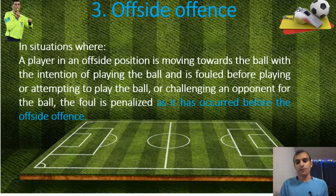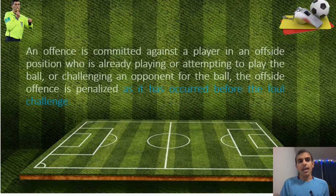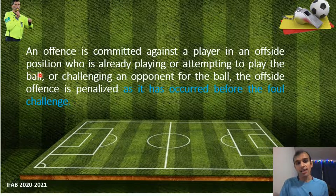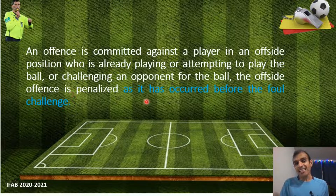Example two: an offense is committed against a player in an offside position who is already playing or attempting to play the ball, or challenging an opponent for the ball. In this case, the offside offense is penalized as it occurred before the foul or challenge.